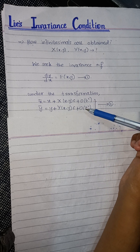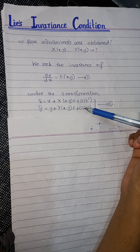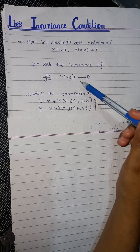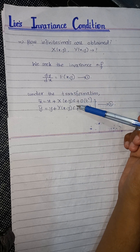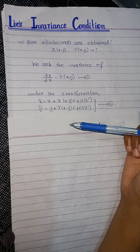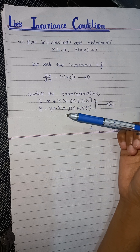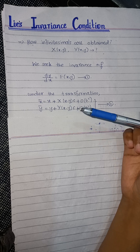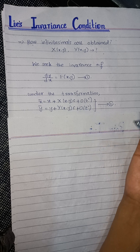If you remember, in my previous videos I solved a particular example in which we were given an ODE and also the Lie group, and we proved that under that Lie group the given differential equation is invariant. But now we are going to give a general proof, so we have to use the general form of the Lie group and also the general form of the first order ODE.